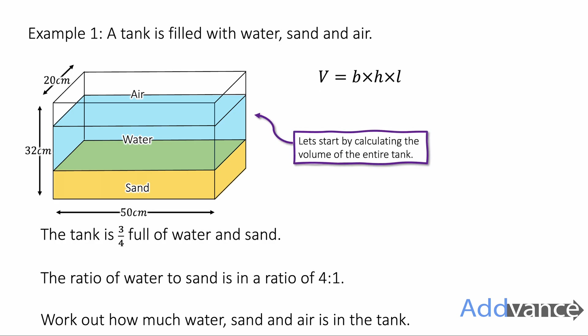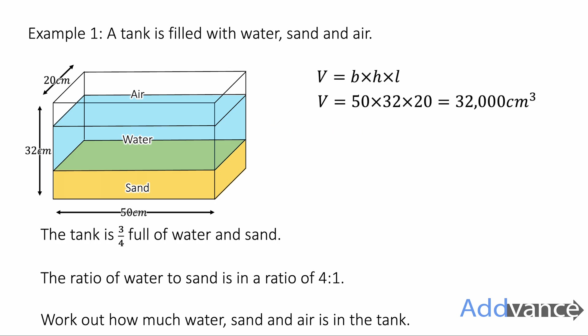Well, we're going to start by working out the volume of the entire tank. To do that we're just going to do base times height times length. Multiply the measurements together and we get 32,000 cm³. Three quarters of this is water and sand, so that's multiplied by three quarters, and we get 24,000 cm³.